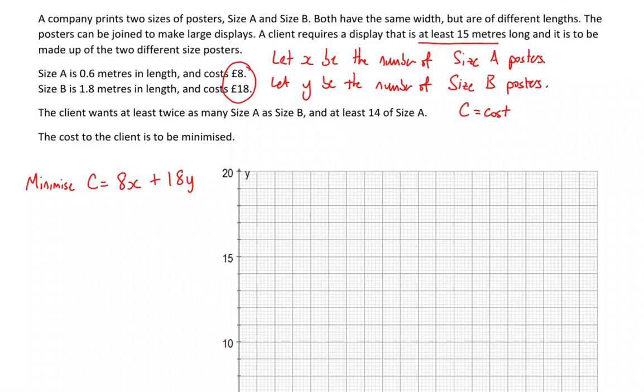Now what about my constraints? Subject to: the client requires a display that is at least 15 meters long, so 0.6 meters times the number of size A plus 1.8 times the number of size B has got to be at least 15 meters, so 0.6x plus 1.8y is greater than or equal to 15.